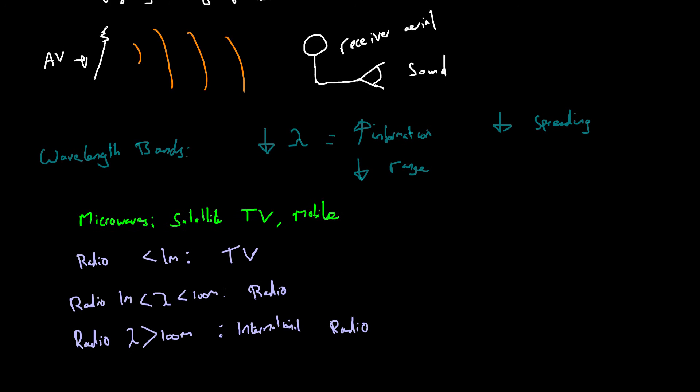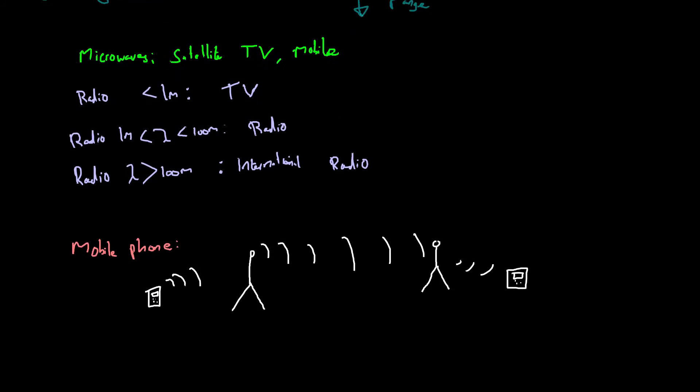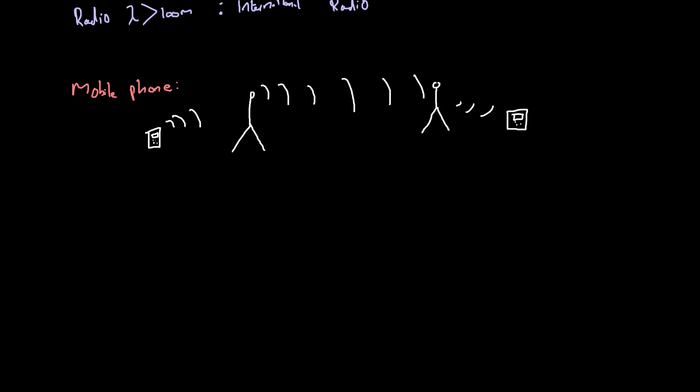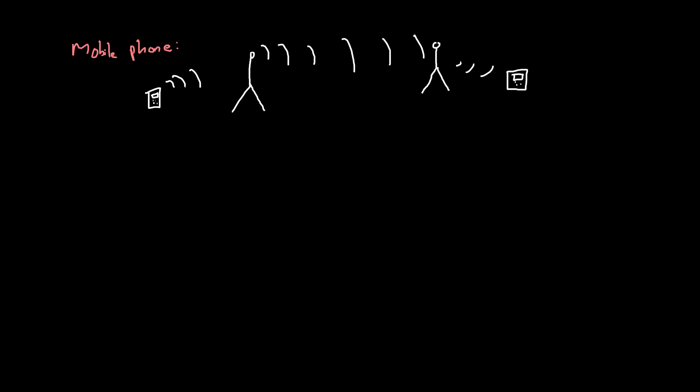Now, so what about mobile phones? Mobile phones are interesting because they use two separate types of wave in order to transfer their signals. So we know that local mobile phone masts are what enable you to have good signal or not good signal. Now, when we call someone, we need to transmit information from our phone to a local mast. That mast is then going to transfer the information to where you need it to go.